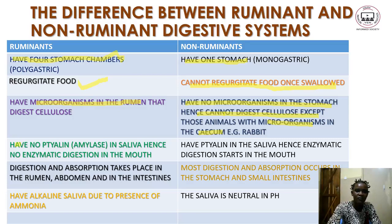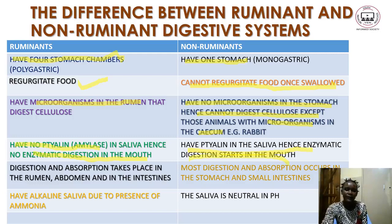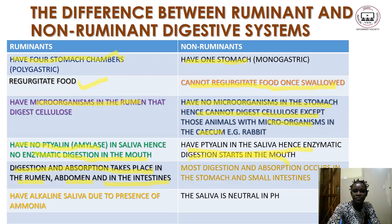Another difference is that ruminants have no amylase or ptyalin enzymes in their saliva, so no enzymatic digestion occurs in the mouth. But in non-ruminants they do have enzymes in their saliva, therefore enzymatic digestion starts in the mouth. Also, in ruminants digestion and absorption takes place in the rumen, abomasum, and intestines, while in non-ruminants most digestion and absorption occurs in the stomach and small intestine. Lastly, ruminant animals have alkaline saliva due to the presence of ammonia, while in non-ruminants the saliva is neutral in pH.